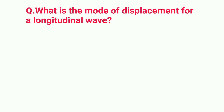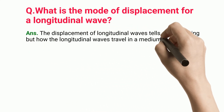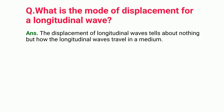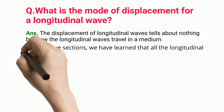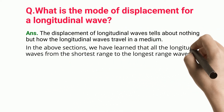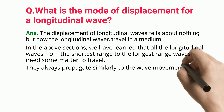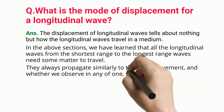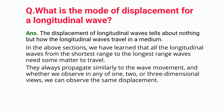What is the mode of displacement for a longitudinal wave? The displacement of longitudinal waves describes how the longitudinal waves travel in a medium. All the longitudinal waves, from the shortest range to the longest range, need some matter to travel. They always propagate similarly to the wave movement, and whether we observe in one, two, or three-dimensional views, we can observe the same displacement.